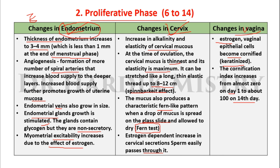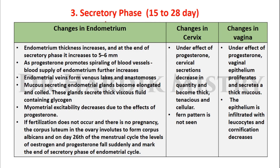Now the changes occurring in the secretory phase, day 15 to 28. The same five points are covered: endometrial thickness increases, reaching up to 5 to 6 mm at the end of the secretory phase. As progesterone promotes spiraling of blood vessels, blood supply to the endometrium further increases. The secretory phase is basically due to the effect of progesterone.